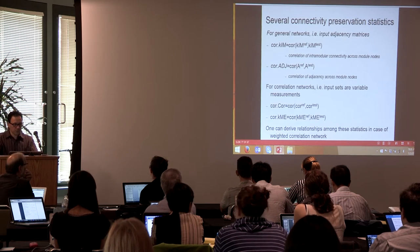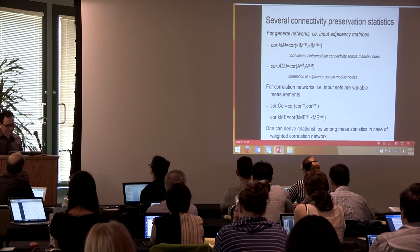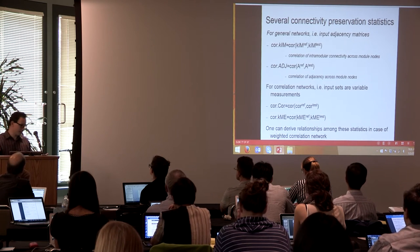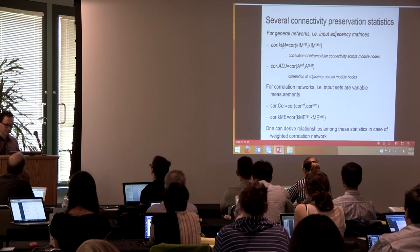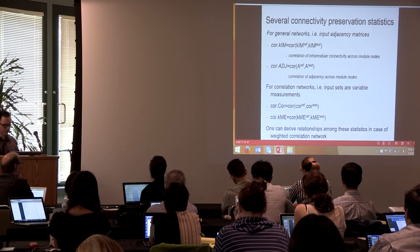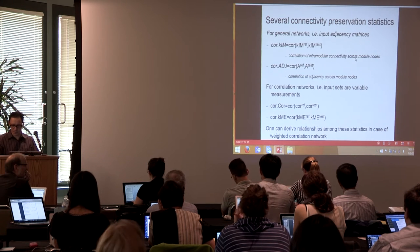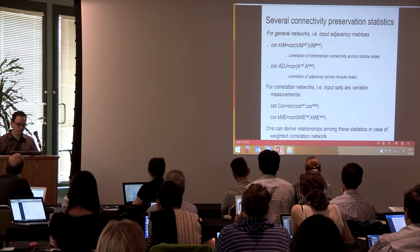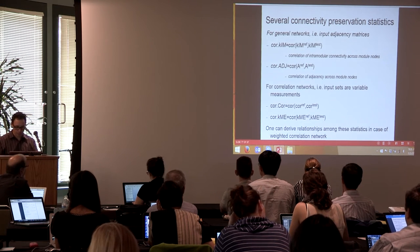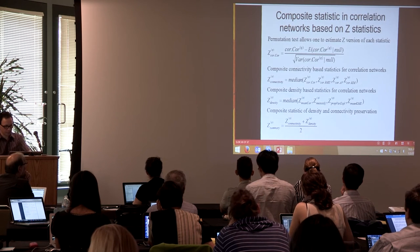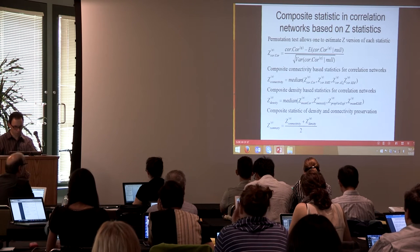We now have four connectivity statistics. They are all very related empirically — a module with high cor.intramodular connectivity also has high cor.KME and cor.cor. Rather than engaging in endless reviewer discussions about which measure is better, we aggregate all of them into one composite measure. We define statistics for each measure, then form the median across the four.